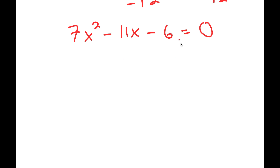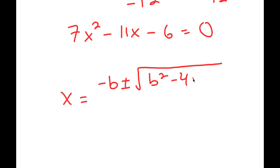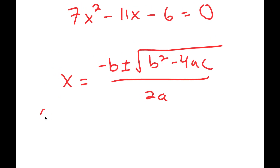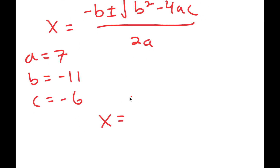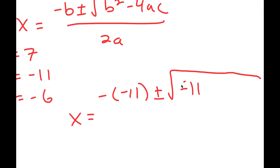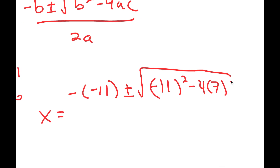This is a quadratic equation, so I can use the quadratic formula: x equals negative b plus or minus the square root of b² minus 4ac, all over 2a. In this case, a is 7, b is negative 11, and c is negative 6. Plugging these in, I get x equals negative of negative 11, plus or minus the square root of (−11)² minus 4 times 7 times negative 6, all over 2 times 7.